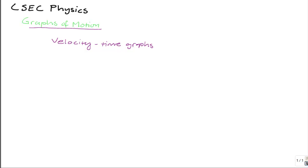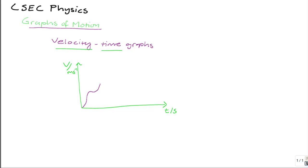Velocity time graphs are another type of graph of motion. They display how the motion of an object — in this case the velocity of the object — varies as time varies. Your velocity versus time graph has two axes: your y-axis has velocity on it, with units of meters per second, and your x-axis has time with units of seconds. The line drawn between these two axes shows you whether the velocity is increasing, decreasing, or constant with time.